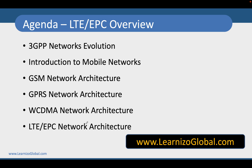What we are going to talk about in this series: we'll start our journey with the 3GPP network evolution, where we will talk about all the technologies from 1G to 5G. Then we will have a quick look at the introduction of mobile networks, followed by GSM network, GPRS network, and WCDMA network architecture. This video series is going to be about 4G, but to reach that level we need some building blocks, which is what we are going to cover in GSM, GPRS, and WCDMA network architecture.